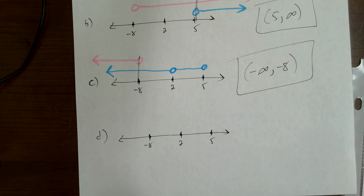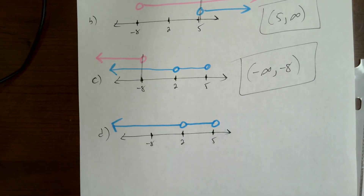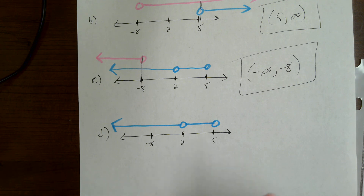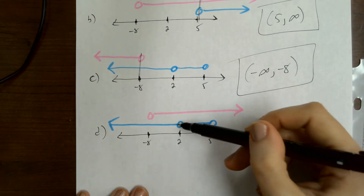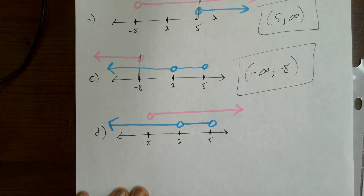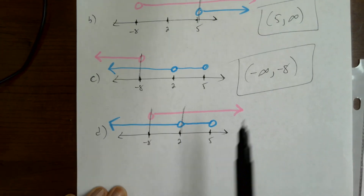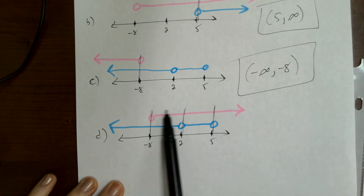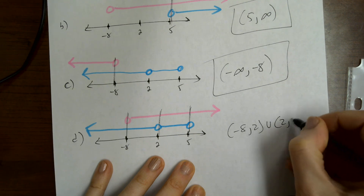And then we need decreasing and concave down — that's when F double prime is negative. Remember where those holes are — F prime is neither positive nor negative at those points, so F is neither increasing nor decreasing there. You're going to have a union — an overlap here and then another overlap here. So the answer is negative eight to two, union two to five.